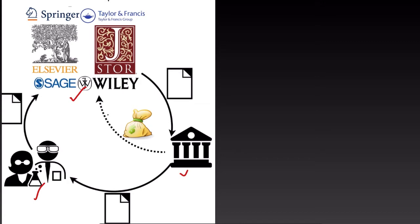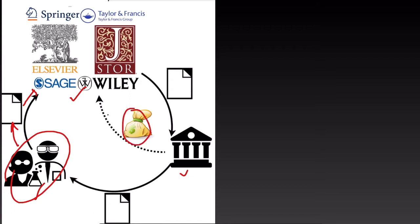Generally, what happens is the researchers, after completing the research, make it into a manuscript and send it to the publishers, where they do a peer review process and quality check, and they decide to accept or reject. With modifications, they may publish your paper. After this, the paper can be accessed through institutions by paying money, or access can be given to subscribers who pay money to that particular journal.